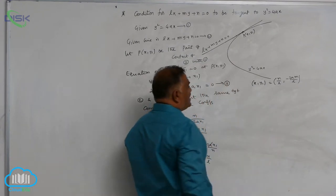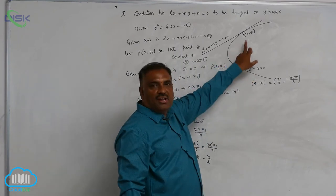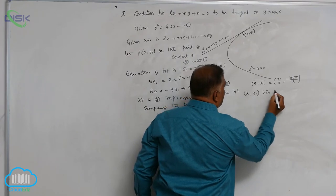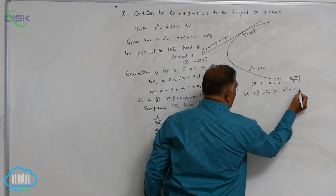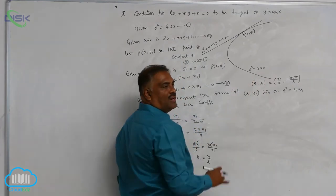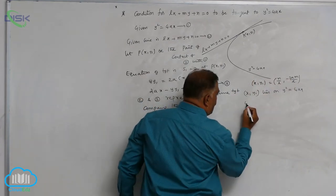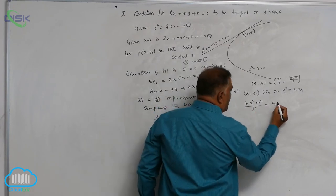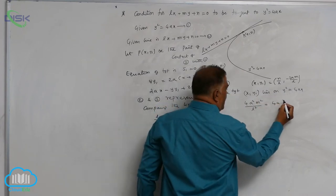Since this point x1, y1 lies on the parabola, x1, y1 lies on y square equal to 4Ax. Substitute in the points. This is: 4A square M square by L square is equal to 4A into N by L.